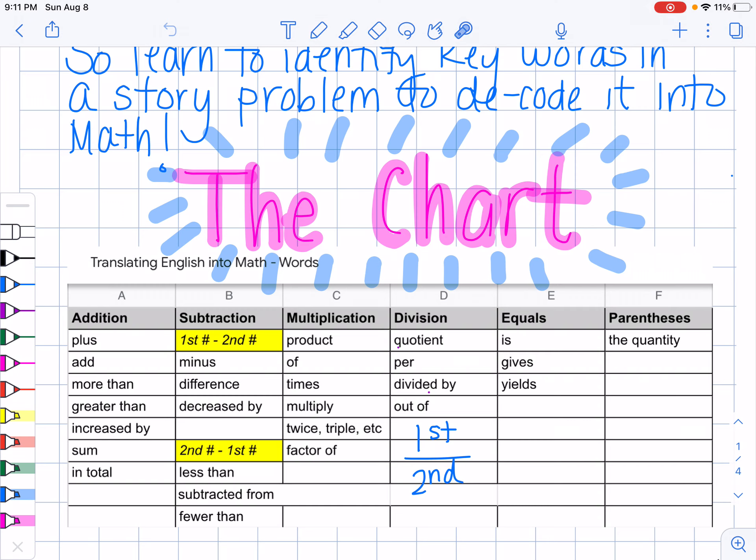So here on this subtraction one and the division one, the order which you write things matter. So that's why on the subtraction one you'll see where it has first number minus second number and second number minus first number. We'll talk about that.